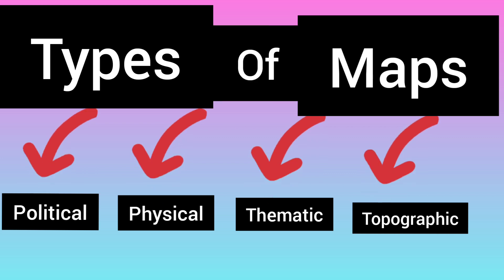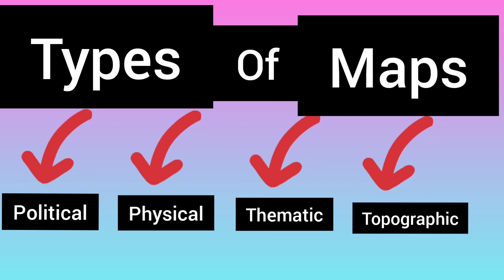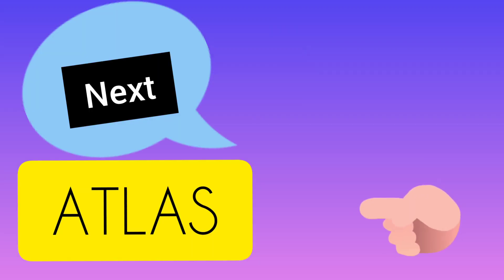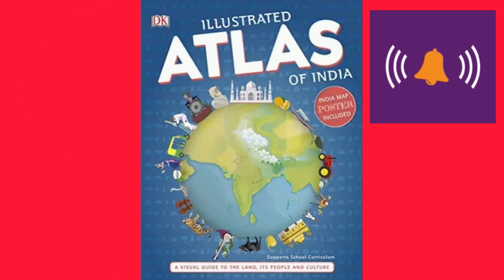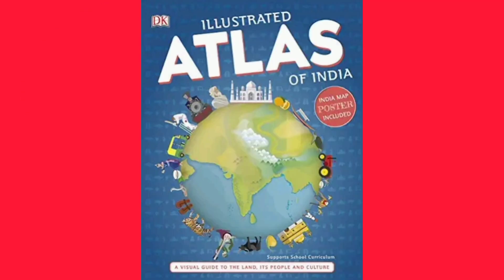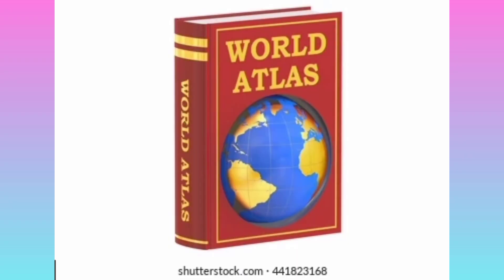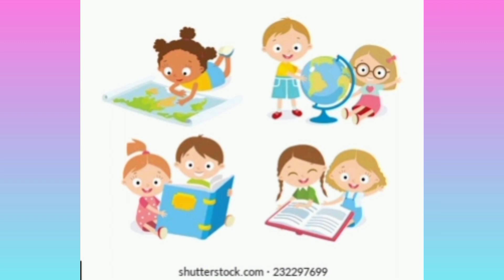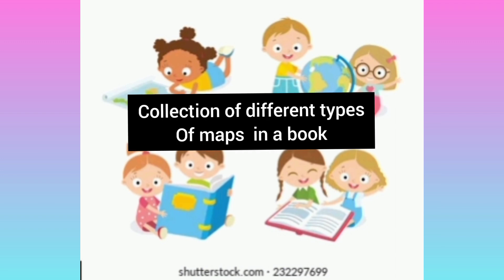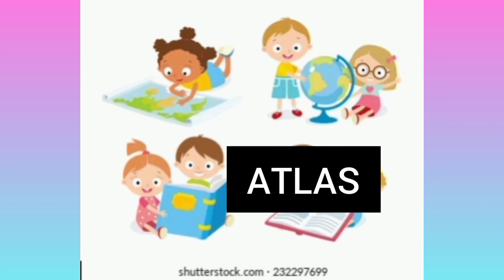This is the information related to the types of maps. I hope that it is clear to you all. Next we'll discuss about the Atlas. An Atlas is a book which consists of different types of maps together — a collection of all maps in one book is called an Atlas.